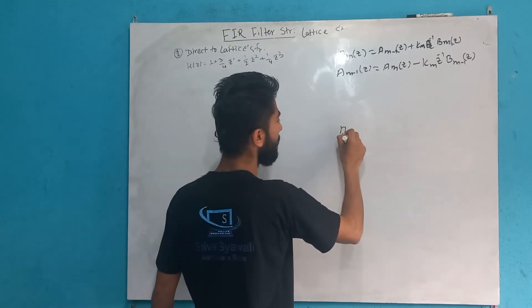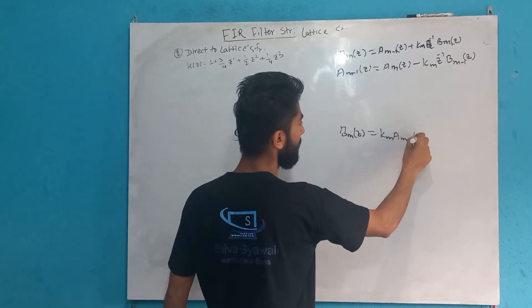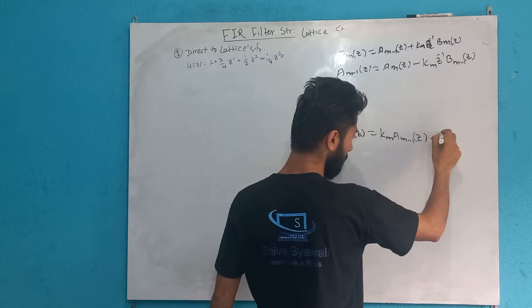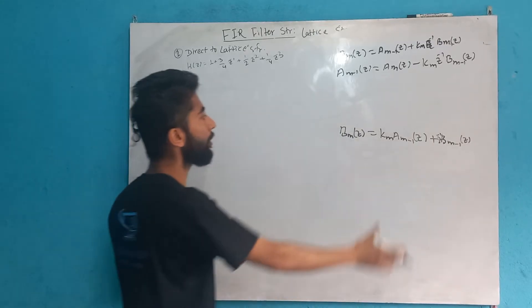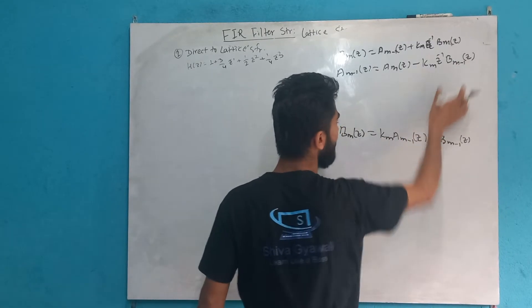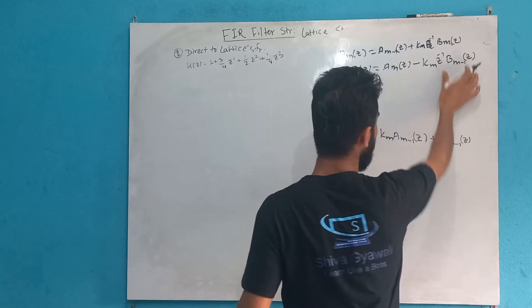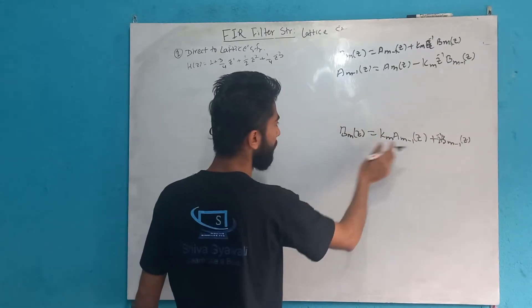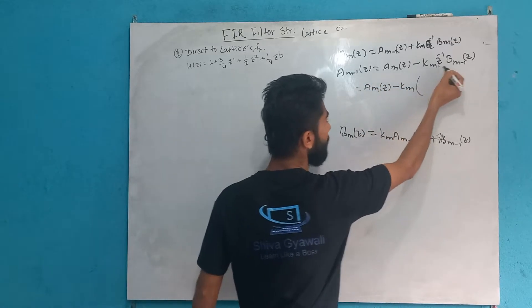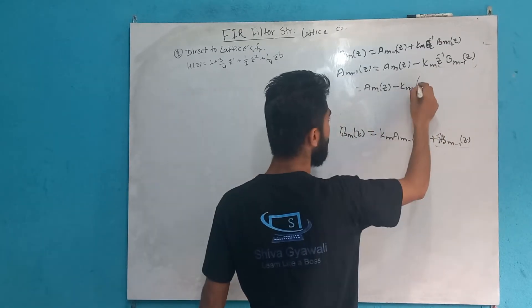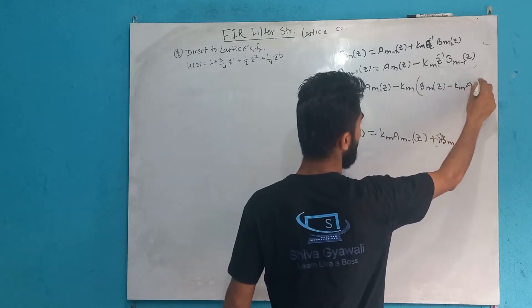The formula also gives us: B_m(z) = k_m * A_{m-1}(z) plus z^{-1} * B_{m-1}(z). This is the expression for B_{m-1}(z), and this is B_{m-2}(z).